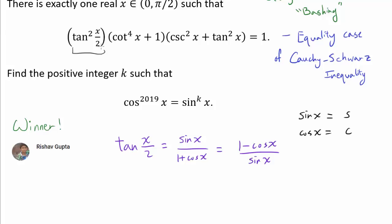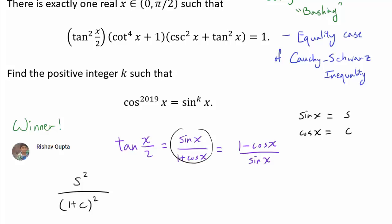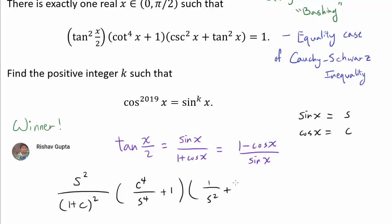So we have tangent squared of x over 2, which is s² over (1 + c)², times cotangent to the fourth of x, that's c⁴ over s⁴, plus 1, times 1/s² plus s²/c², all equal to 1.